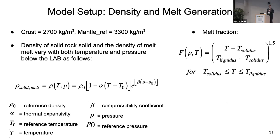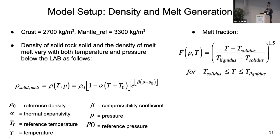What's different about this model for asthenospheric flow is how we calculate density and allow for melt generation. The lithospheric density is fixed, but below the lithosphere it is pressure and temperature dependent, allowing density calculations for melt and solid regions. We use a melt fraction equation to determine if the temperature crosses the solidus or liquidus — whether part of the model meets conditions for melting.